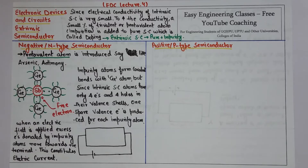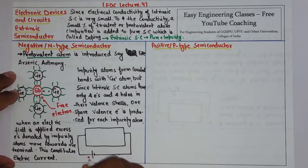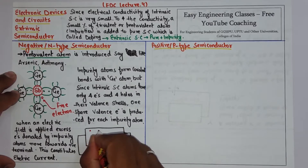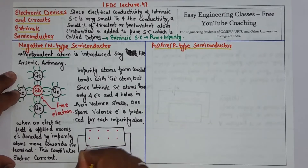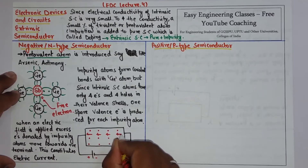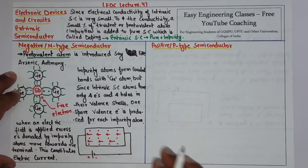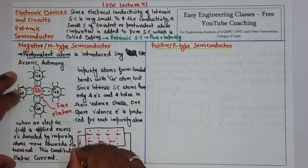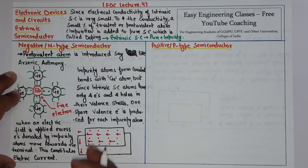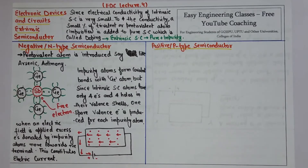So when an electric field is applied, the excess electrons donated by the impurity atoms move towards the positive terminal of the battery. This constitutes an electric current. In this way you get electric current in n-type semiconductors.